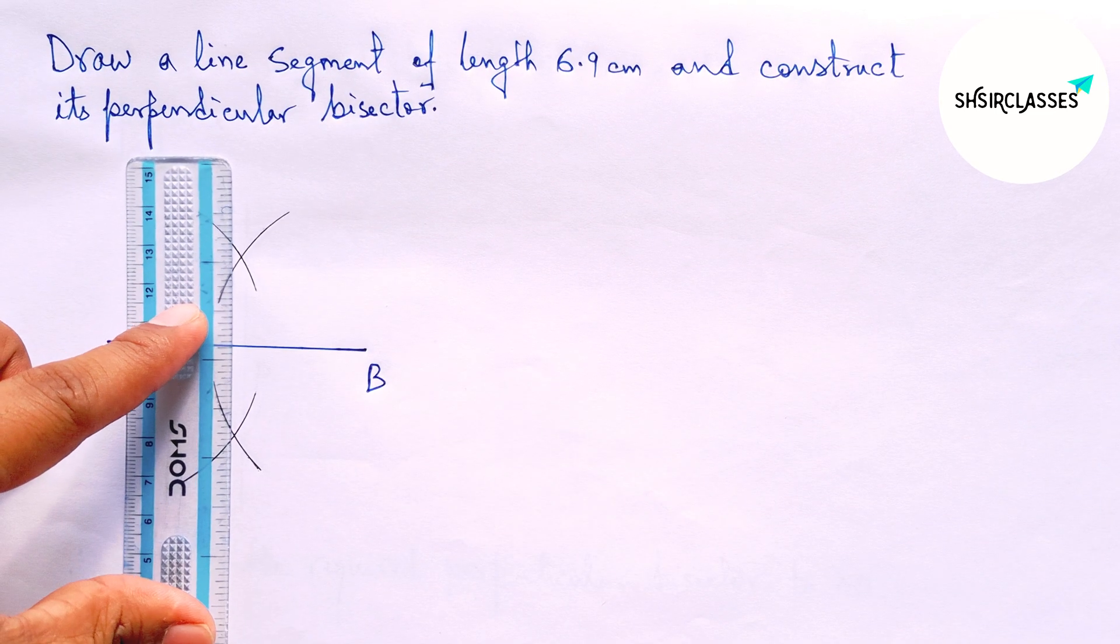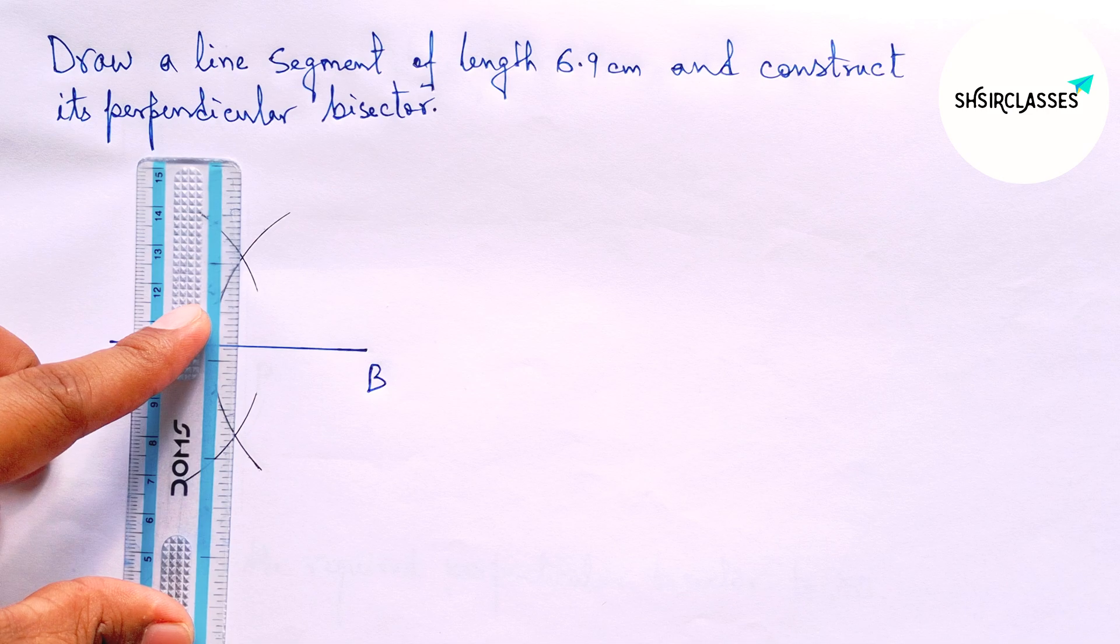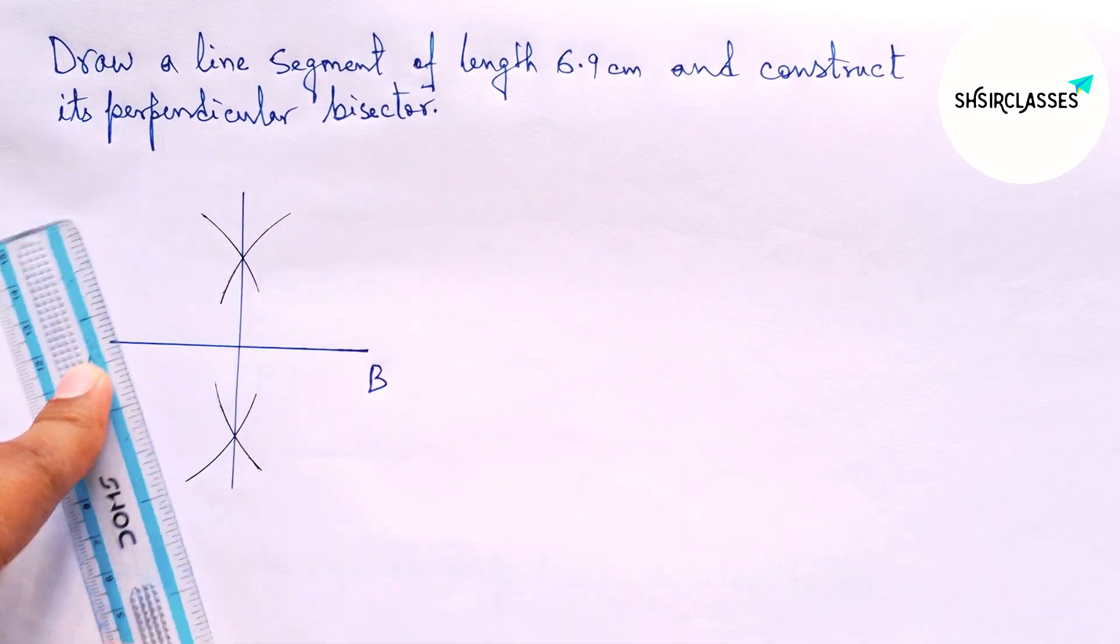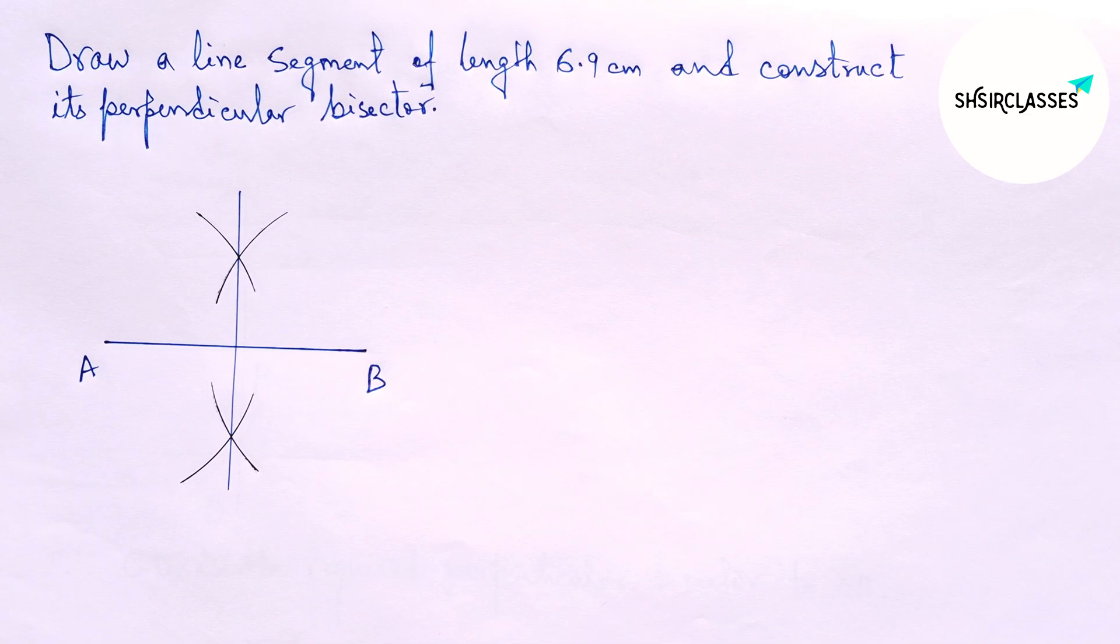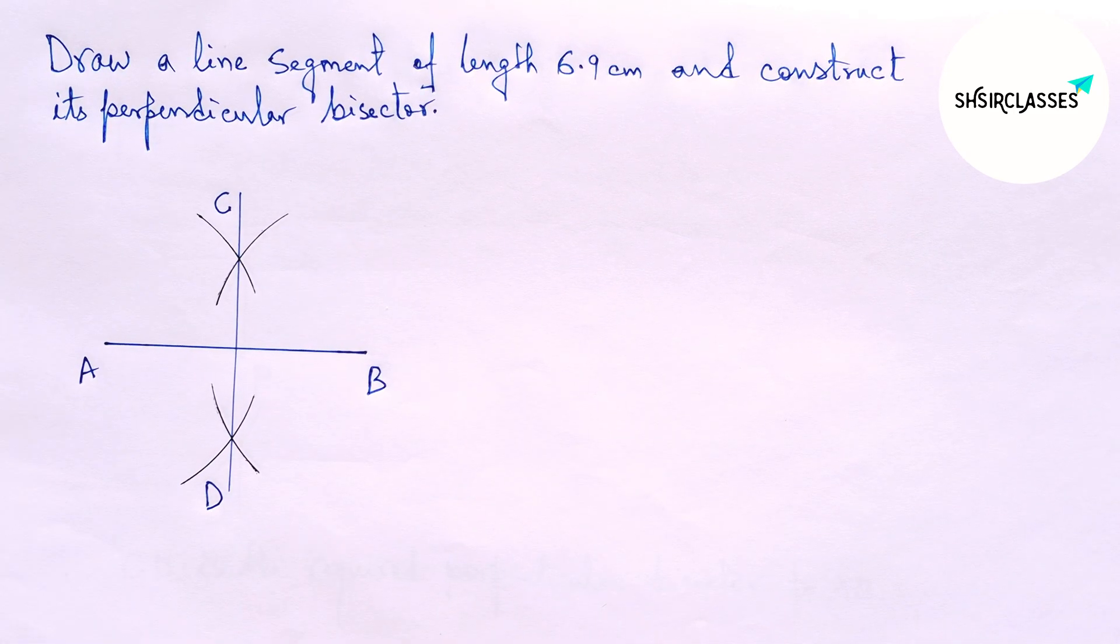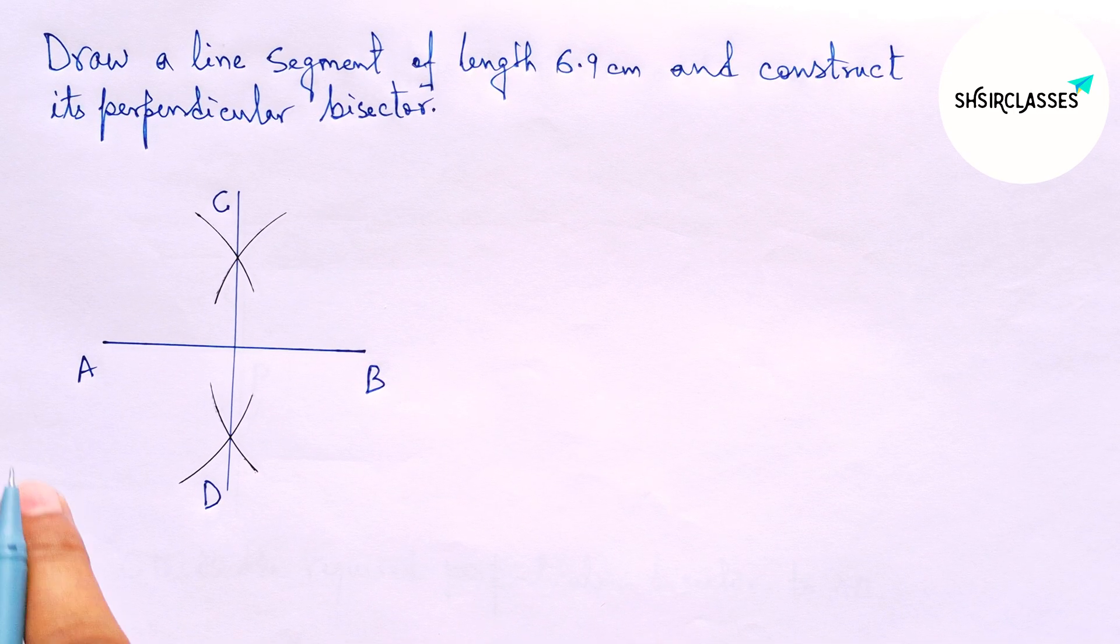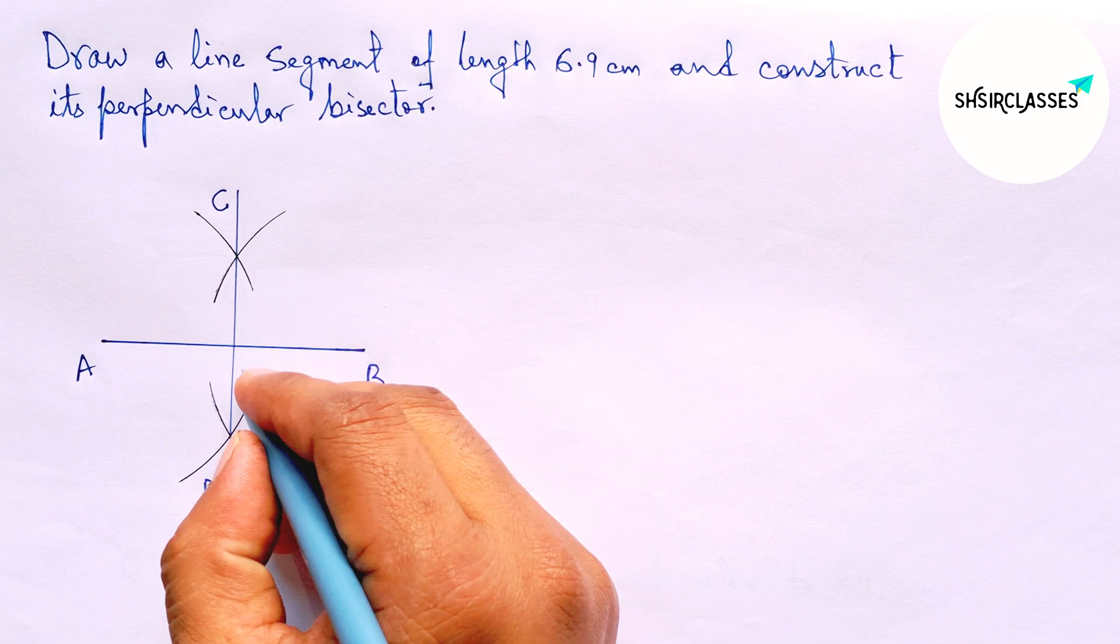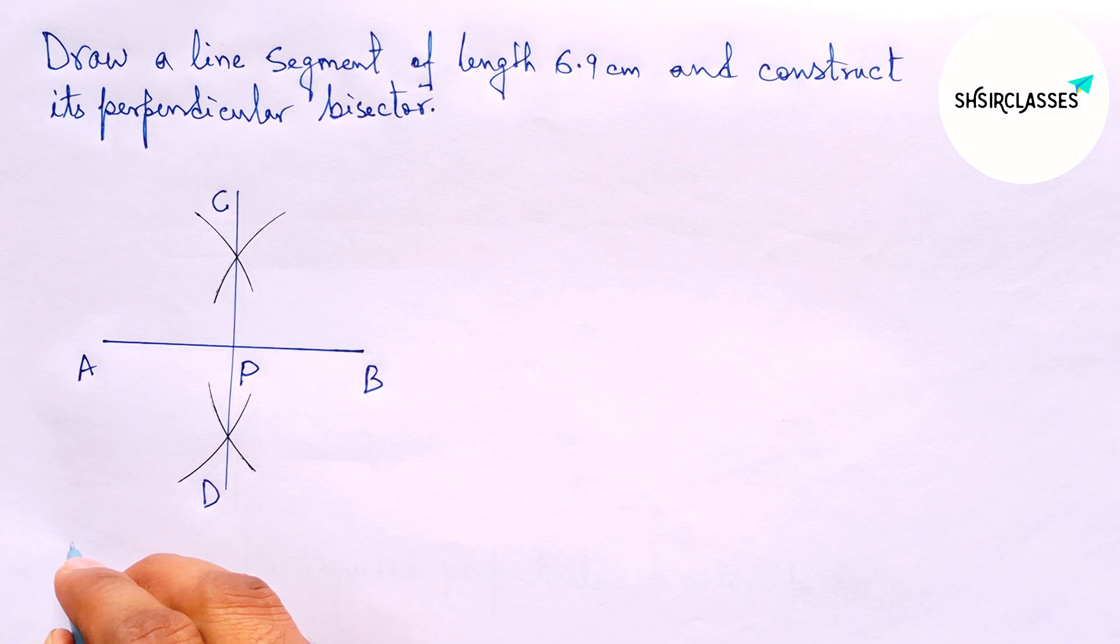Now joining this and this is the required perpendicular bisector. So labeling here C and here D. AB and CD both intersect here at a point, so taking here point P.